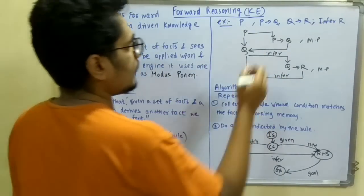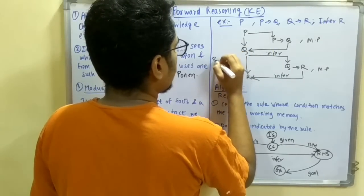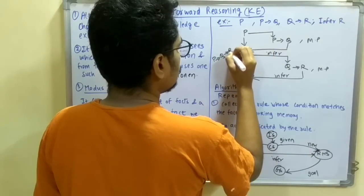The knowledge we have gained in this is: from P you derived Q, from Q you derived R.